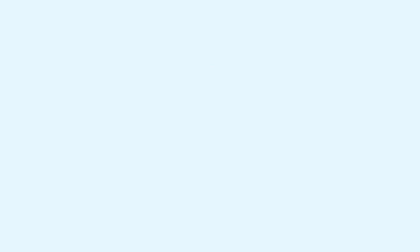Another example: 107 minus 78. We start subtracting in the ones place. We can't subtract 8 from 7, so we have to take a 10 to make 10 ones. But in the tens place, there are no tens to take — there's a zero. So we take a 100 from the hundreds place to make 10 tens.